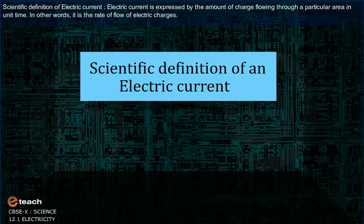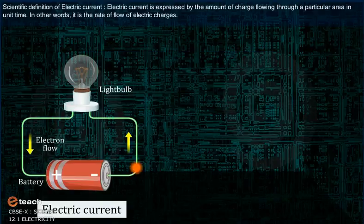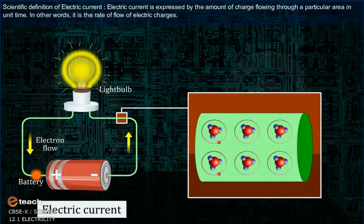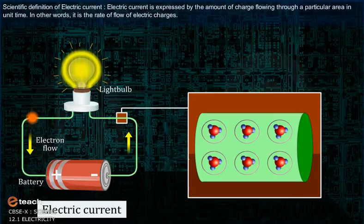Scientific definition of an electric current. Electric current is expressed by the amount of charge flowing through a particular area in unit time. In other words, it is the rate of flow of electric charges.